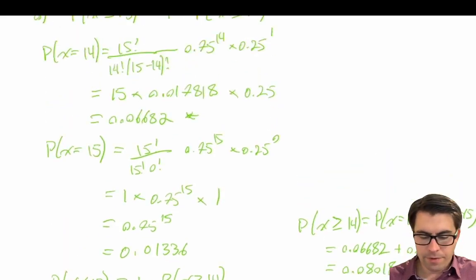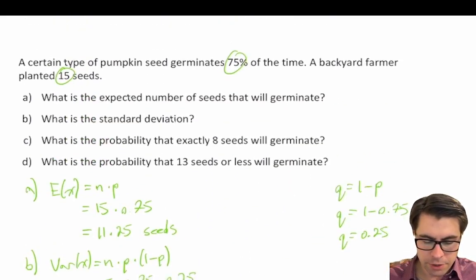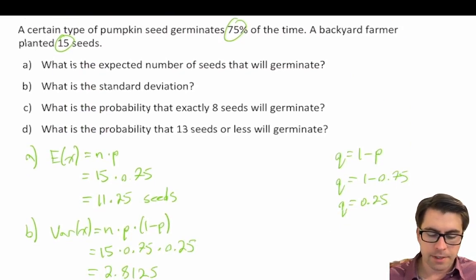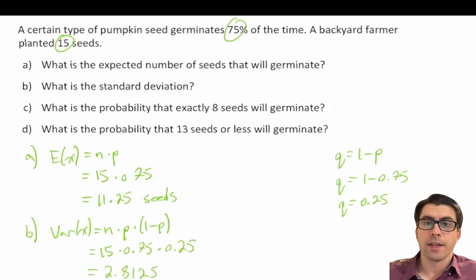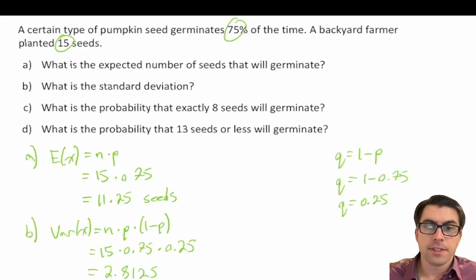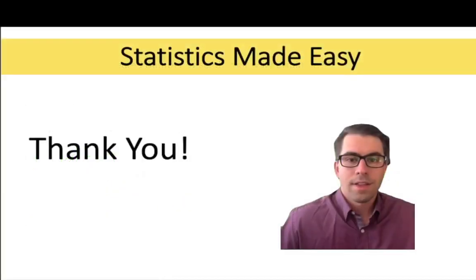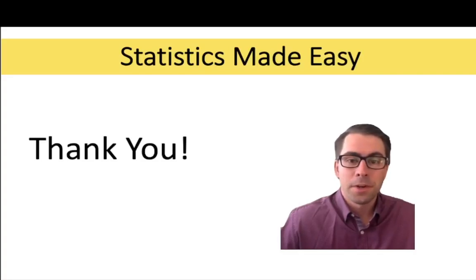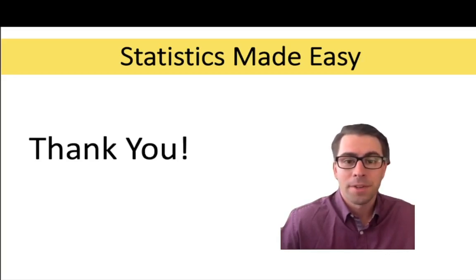And there we have it — we've completed this question. As a refresher: we've calculated the expected number, the standard deviation, the probability that exactly eight seeds germinated, and the probability that 13 seeds or less would germinate. That's it for this video. If you found it helpful, consider giving it a like, and if you still need more help with statistics, consider subscribing to the channel.